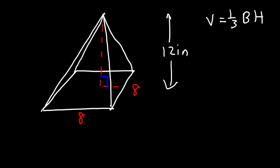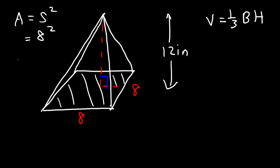So what is the area of the base? That's the area of the square. The area of the square is side squared, or 8 squared, which comes out to 64. So now we can find the volume of the pyramid.